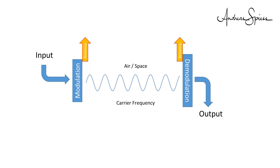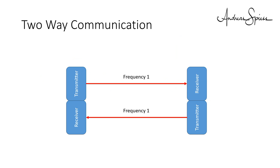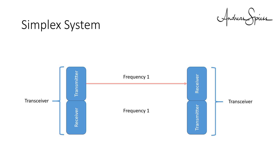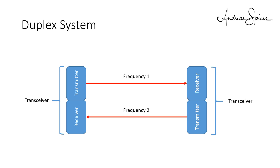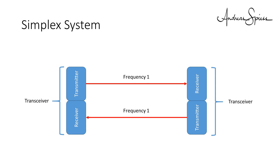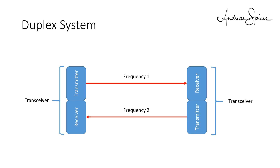We always talked about a transmitter and a receiver. What if we need two-way communication? We need a transmitter and a receiver on both ends — these devices are usually called transceivers. We have two possibilities: either we use the same frequency for both directions, called simplex, and switch direction from time to time; or we use different frequencies for both directions, called duplex. Examples for simplex are most devices used by makers; an example of duplex is mobile phones.